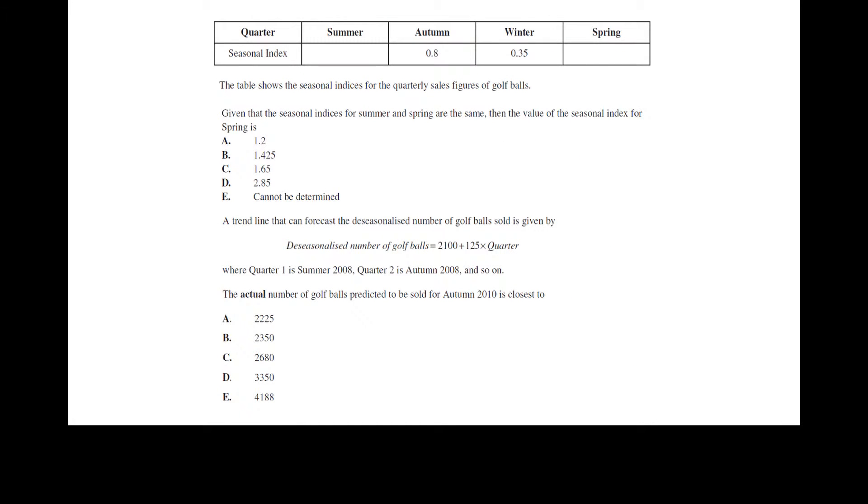Okay, on to some questions to do with seasonal indices. So the table here shows the seasonal indices for the quarterly sales of golf balls. Given that the seasonal indices for summer and spring are the same, then the value of the index for spring is. So remember we have four seasons here, so when we actually add those together, those indices, they should equal four.